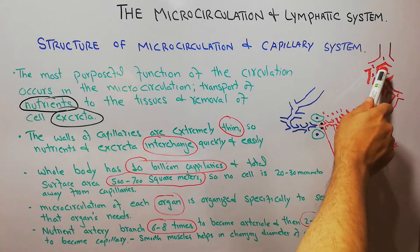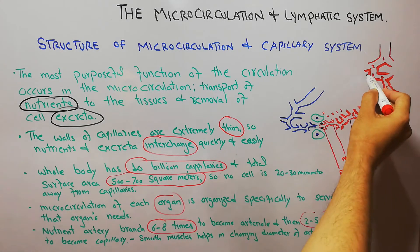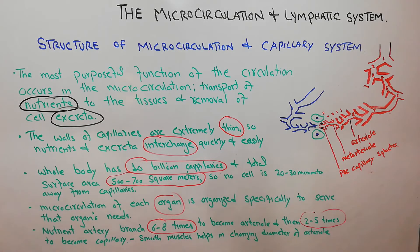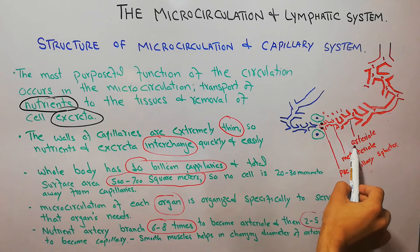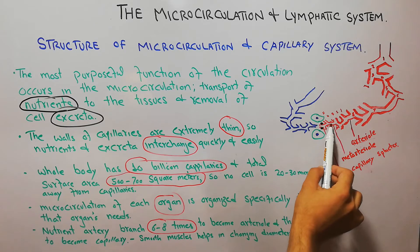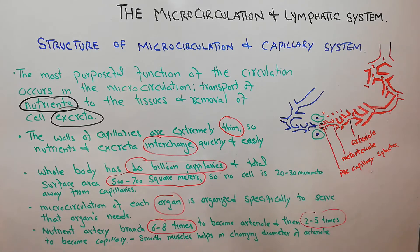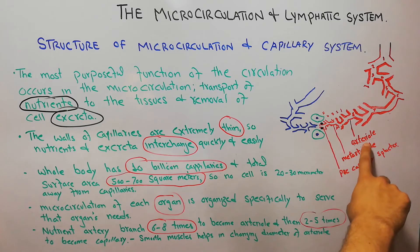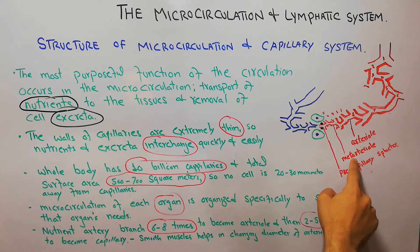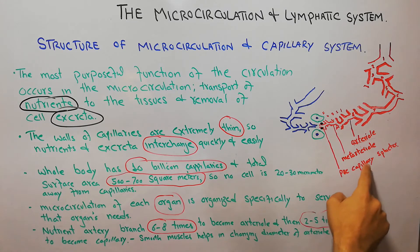This arteriole has a thick wall, shown here in thick red. The wall of these arterioles is very thick. Then this arteriole further divides two to five times — one, two, three, four, five — to become a capillary. Before the level of capillaries, the arteriole becomes a metarteriole, and at the point where the metarteriole connects with the capillary, there is a precapillary sphincter.